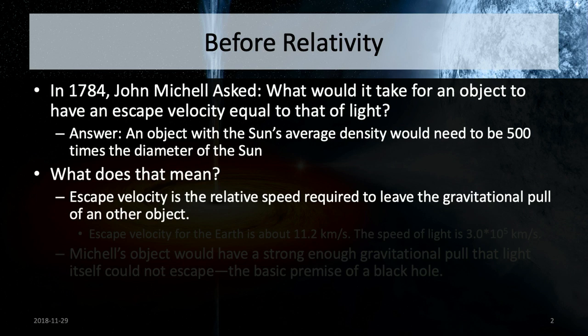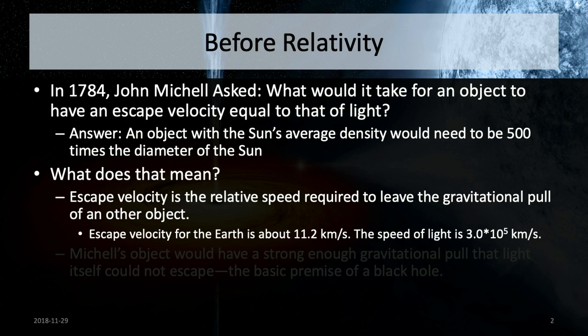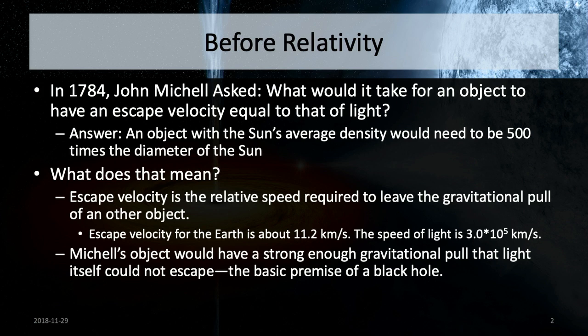Escape velocity is the minimum relative speed needed to escape the gravitational pull of another object. If that escape velocity were to exceed the speed of light — comparing Earth's escape velocity of 11.2 km/s to light's speed of roughly 3×10⁵ km/s, a factor of about 10,000 — you'd have an object where light itself would not move fast enough to escape. This is the basic idea of a black hole: light cannot escape from its surface.